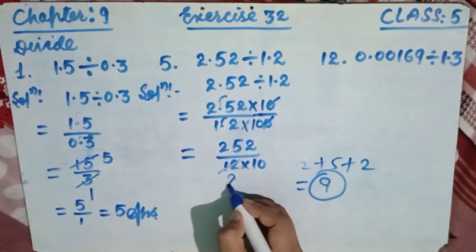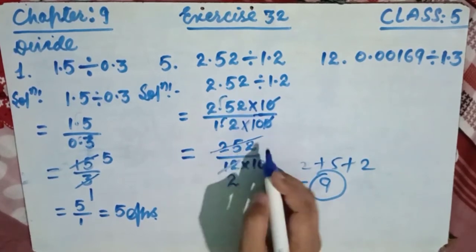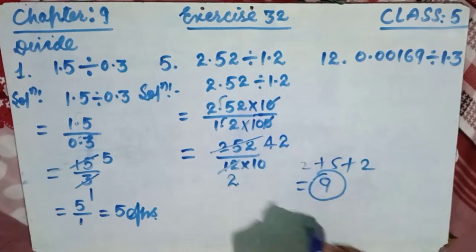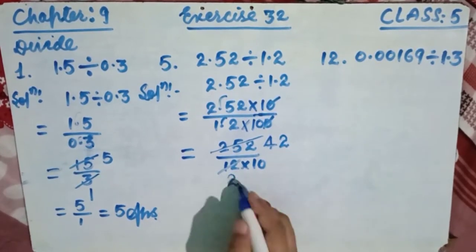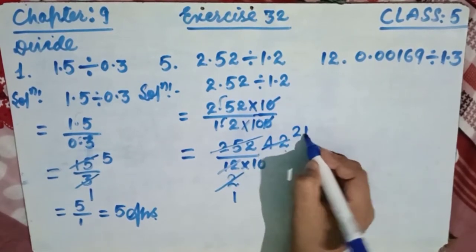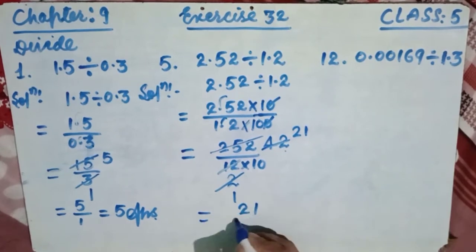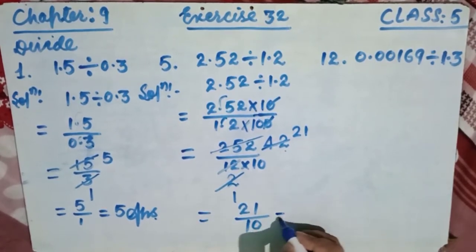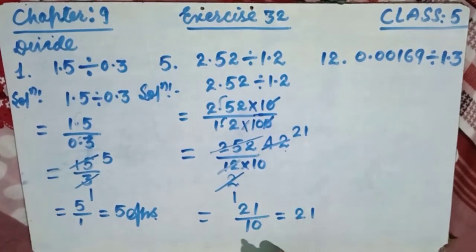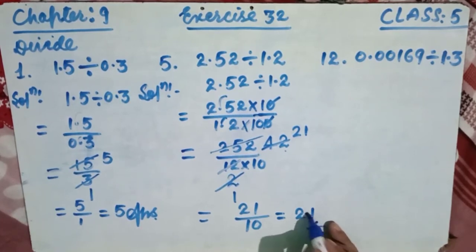6 times 4 equals 24 and 6 times 2 equals 12, so 252 divided by 6 equals 42 and 12 divided by 6 equals 2. Then 42 divided by 2 equals 21, giving us 21 over 10. Since there is one zero in the denominator, we place the decimal one digit from the right, giving a final answer of 2.1.